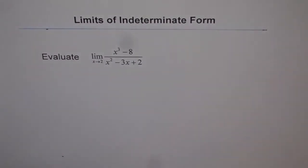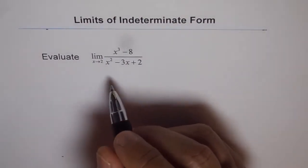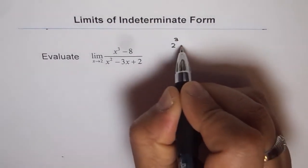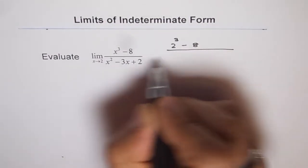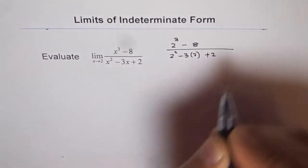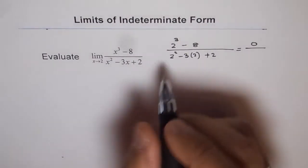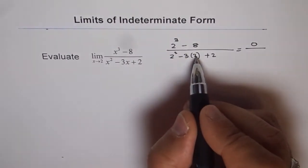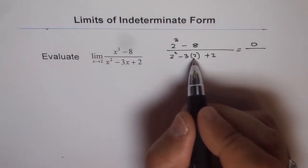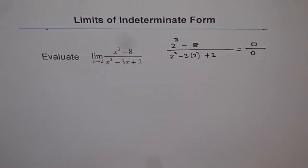Following our technique, we first substitute the value x equals 2 and see what we get. If I substitute 2 here for x, I get 2 cubed minus 8 over 2 squared minus 3 times 2 plus 2. Now 2 cubed is 8, and 8 minus 8 is 0. Here, 2 squared is 4, 3 times 2 is minus 6, and then we have plus 2. So 4 minus 6 is minus 2, and minus 2 plus 2 is also 0. So we get the form 0 over 0.